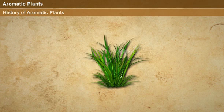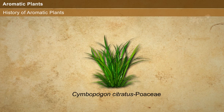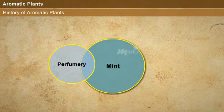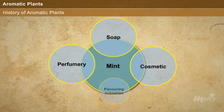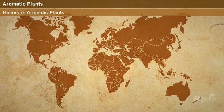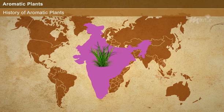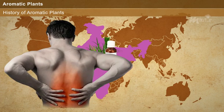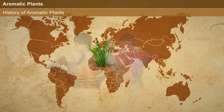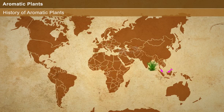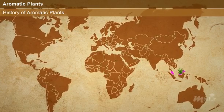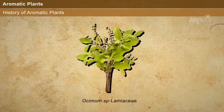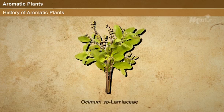Citronella, or Cymbopogon citratus, is otherwise called lemongrass. It is a perennial tufted aromatic grass belonging to the family Poaceae. This is commercially used in perfumery, soap, cosmetic, and flavoring industries all over the world. India is the leading producer of Citronella oil, which is used as massage oil for joints and muscles pain. Citronella is native to Malaysia and is found to be grown in all continents except Antarctica.